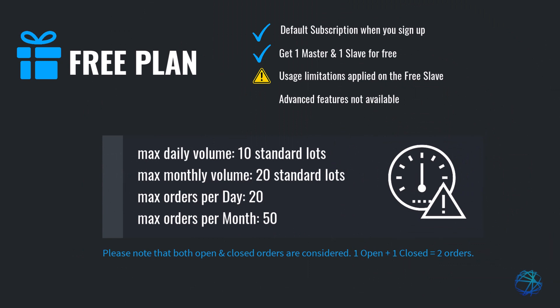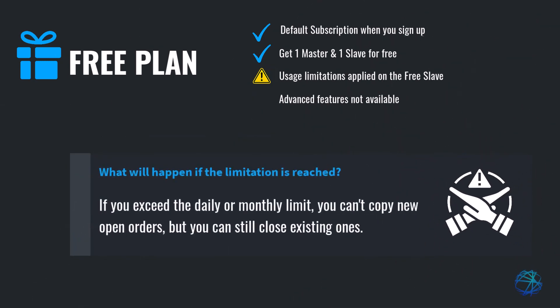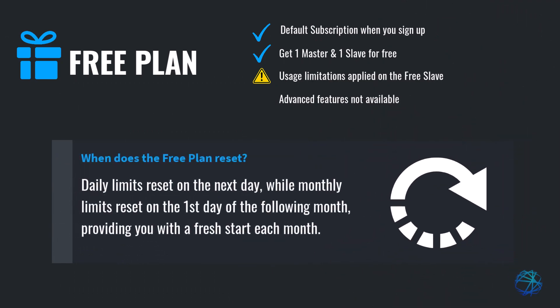With a free plan, remember that both open and closed orders are counted, and each trade is considered as two orders. If you exceed the daily or monthly limit, you cannot copy new open orders, but you can still close existing ones. The daily limits reset on the next day, while monthly limits reset on the first day of the following month, providing you with a fresh start each month.